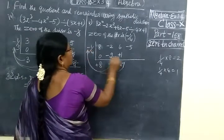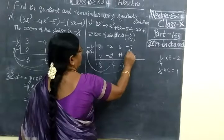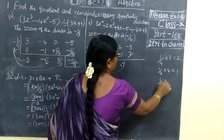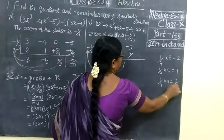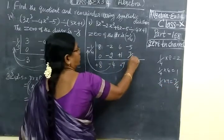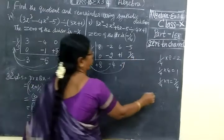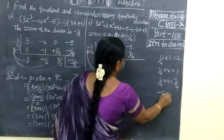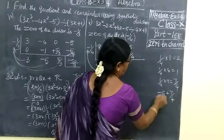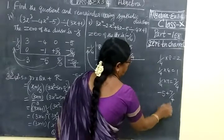Again you multiply. So 1 by 4 into 7 equals 7 by 4. Here you are writing 7 by 4. For this you do the calculation: minus 5 plus 7 by 4. If you cross multiply, you are getting minus 20.